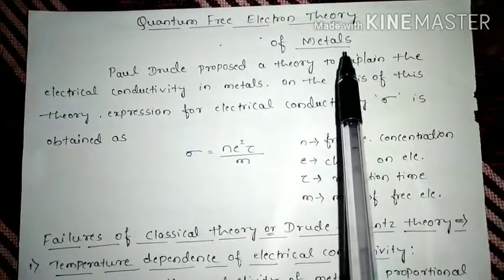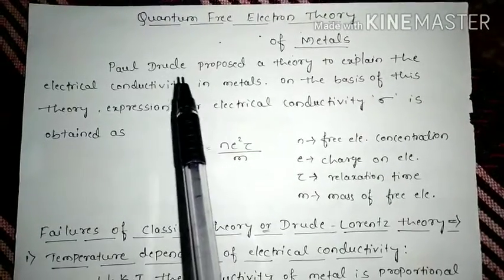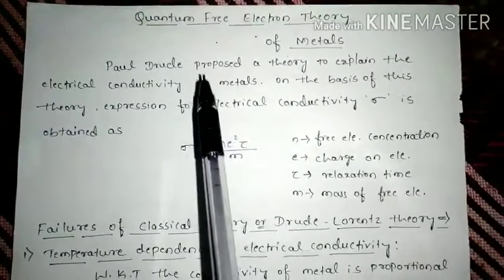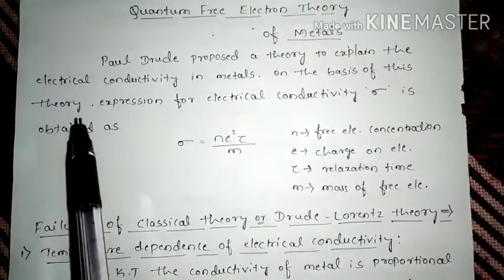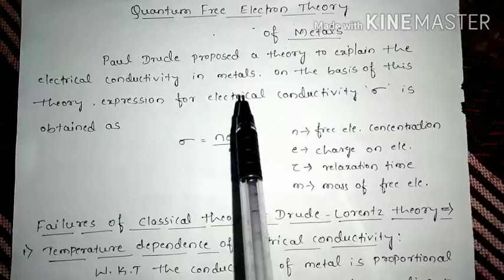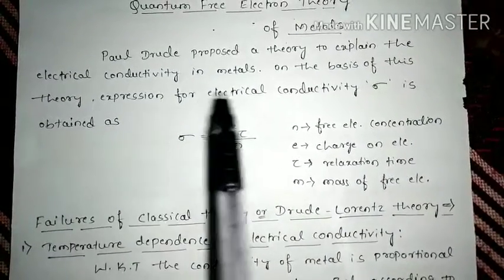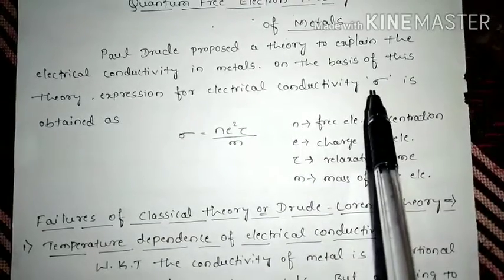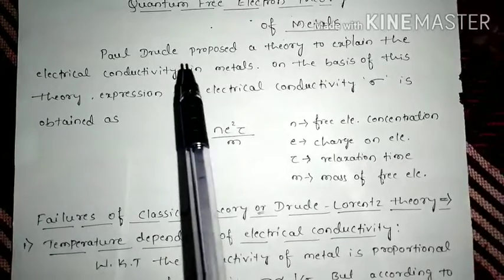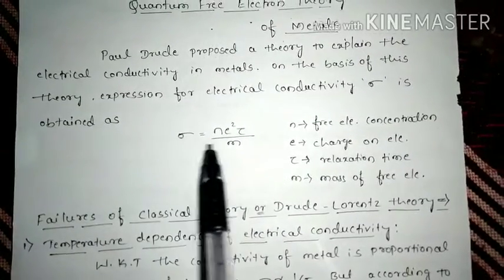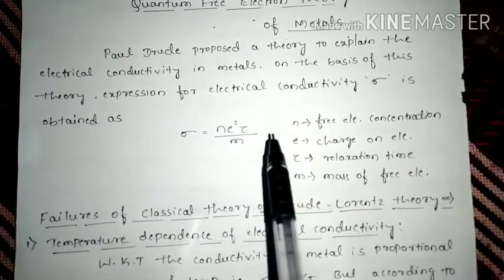So before going to this quantum free electron theory of metals, let us see a brief introduction regarding the classical theory. Paul Drude proposed a theory to explain the electrical conductivity in metals. On the basis of this theory, expression for electrical conductivity σ is obtained. According to Paul Drude classical theory, the electrical conductivity σ is given as ne²τ/m.